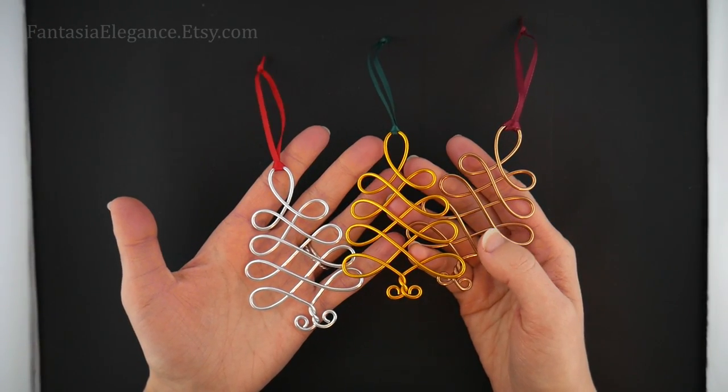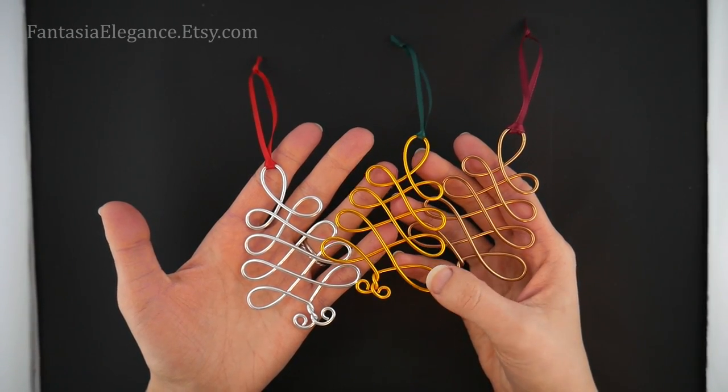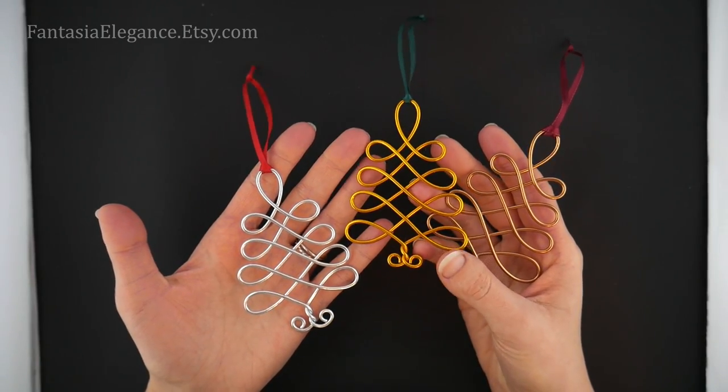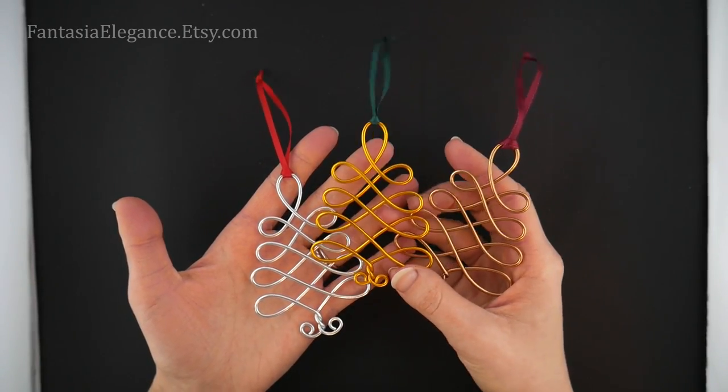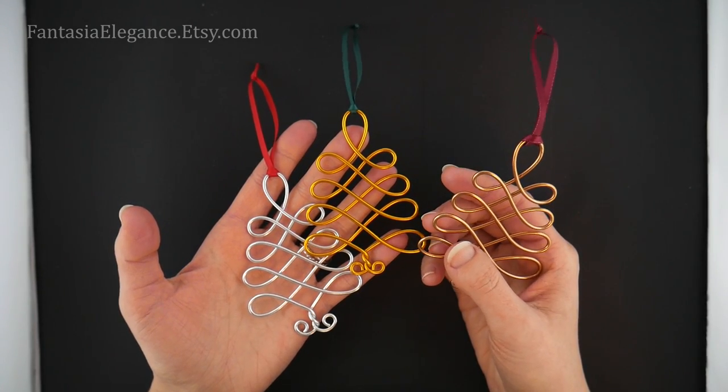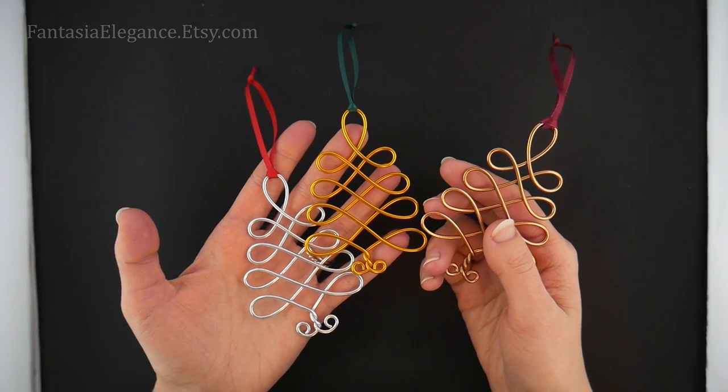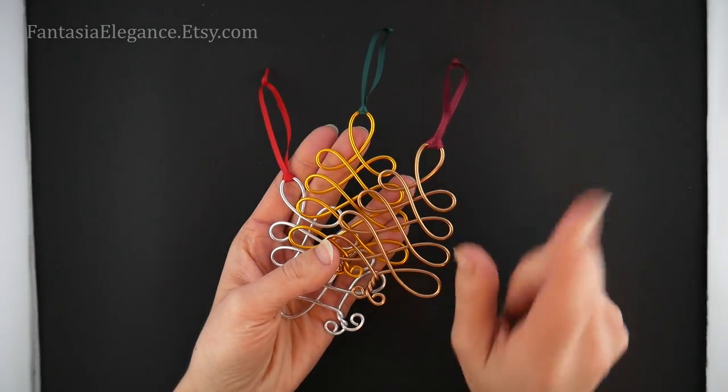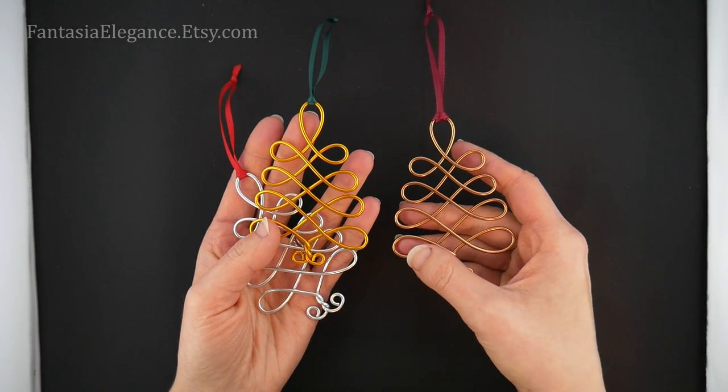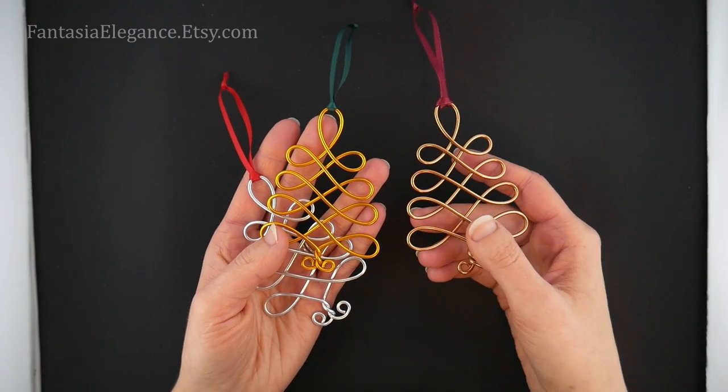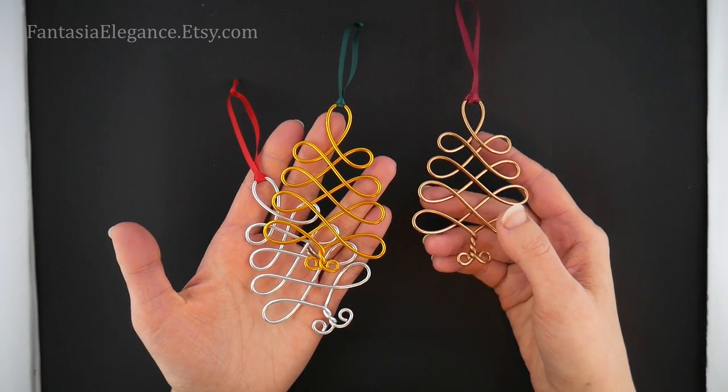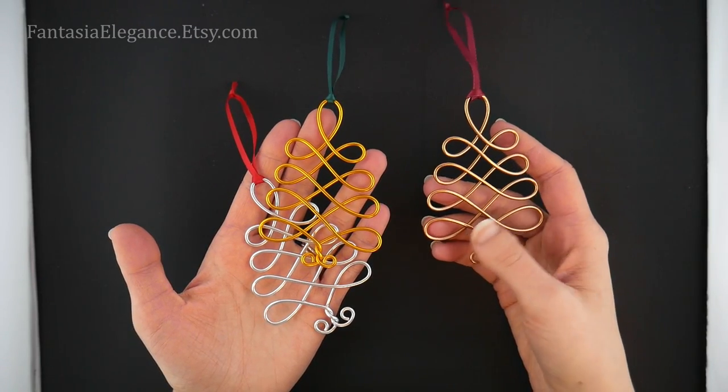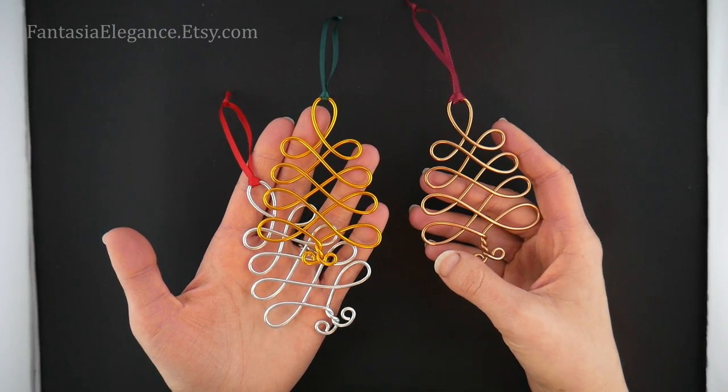Hey guys, Jocelyn here with Fantasia Elegance. In this video I'll be showing you how to make this wire wrapped Christmas tree which you can make into a Christmas tree ornament. You can also do a smaller version for earrings, charms, or pendants. I already have a tutorial on the earring size. For this one I'll show you the ornament size. These are great for last-minute Christmas gifts or stocking stuffers. They work up very quickly and are quite easy. Let's jump in and see what tools and materials you'll need.